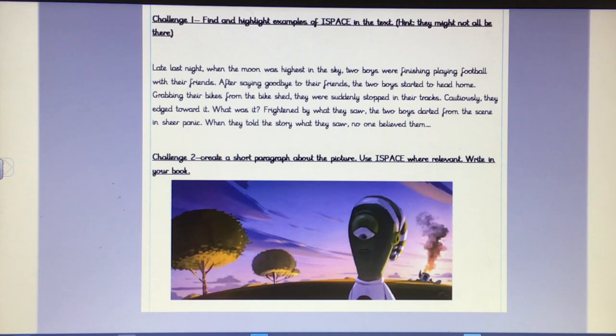Challenge one, you need to find and highlight examples of ISPACE in the text. So they might not all be in there, there might not be a simile, there might not be a conjunction, but try and find the ones that you can find and highlight them for me. And then challenge two, you need to create a short paragraph about the picture, and you need to use ISPACE where relevant, and please write this neatly in your book.